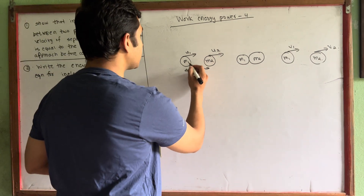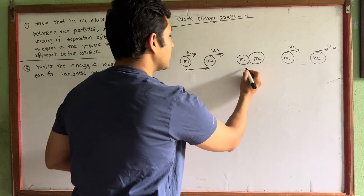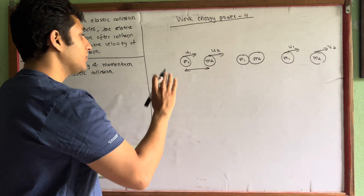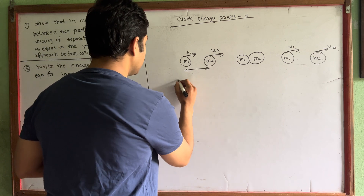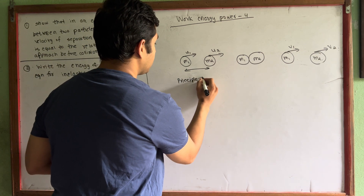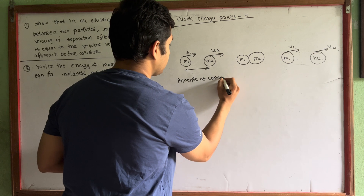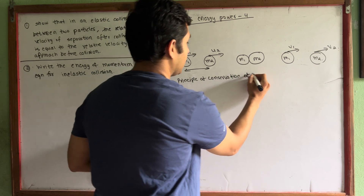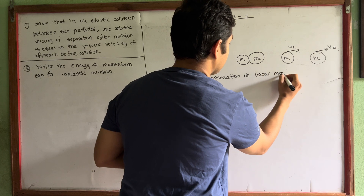Let us consider masses M1 and M2, with initial velocities U1 and U2. Then you can see the collision. So first, we apply the principle of conservation of linear momentum.